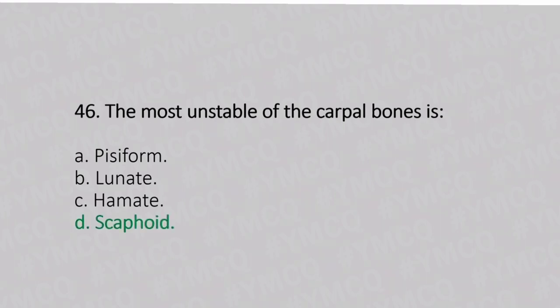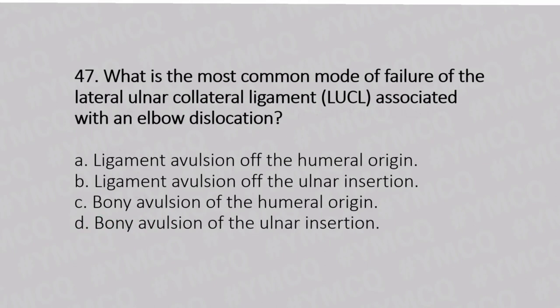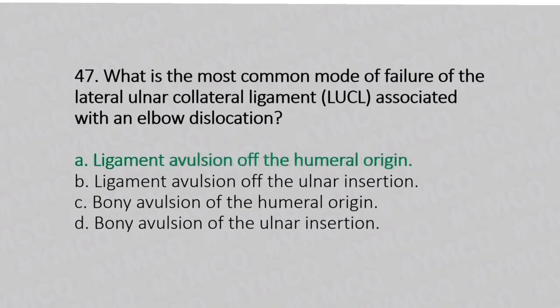Now let's move to question number 47. What is the most common mode of failure of lateral ulnar collateral ligament associated with elbow dislocation? Option A: ligament avulsion of the humeral origin. Option B: ligament avulsion of the ulnar insertion. Option C: bony avulsion of the humeral origin. Option D: bony avulsion of the ulnar insertion. And the answer is Option A, ligament avulsion of the humeral origin.